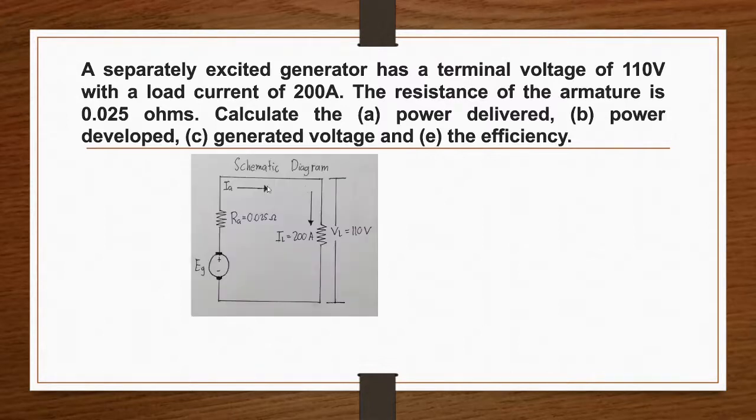This is the schematic diagram of our circuit. We can see that armature resistance is equal to 0.025 ohms. Here our load current is equal to 200 ampere. Our load voltage is equal to 110 volts.